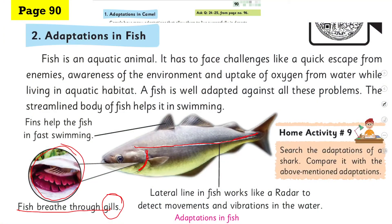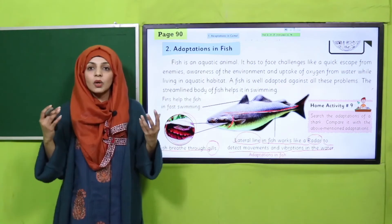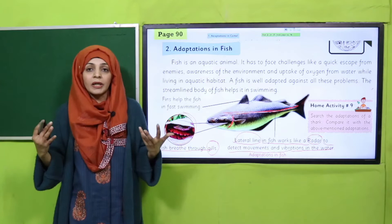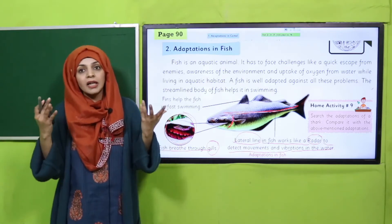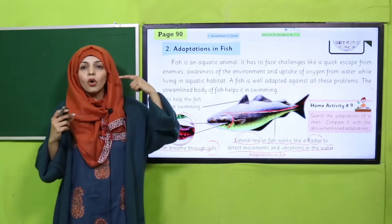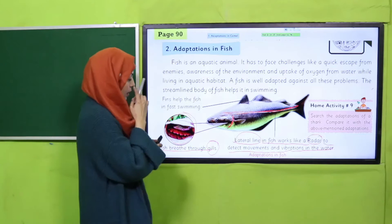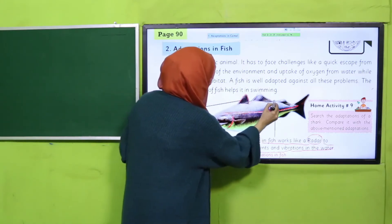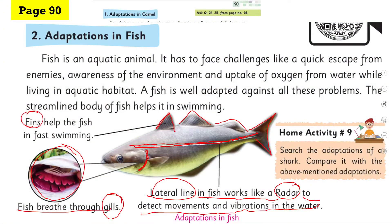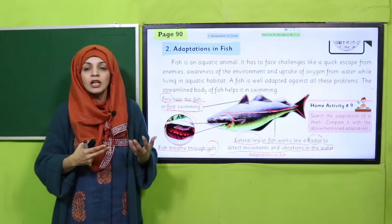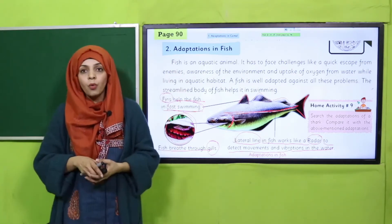Another adaptation is the lateral line. The lateral line in the fish works like a radar to detect movements and vibrations in the water. Ek radar ka kaam yeh hota hai ke koi bhi movement paani ke andar ho to usko detect kare — machli ke andar Allah Ta'ala ne yeh natural radar banaya hai aur woh door se bhi koi movement paani ke andar ho to easily detect kar leti hai. Another adaptation is fins — these are the fins of the fish. Fins help the fish in fast swimming; Allah Ta'ala ne uske andar fins banaye hain so that it can easily move and swim in water.